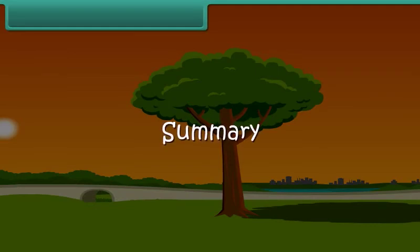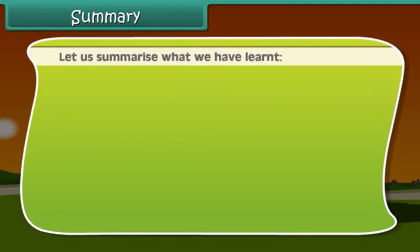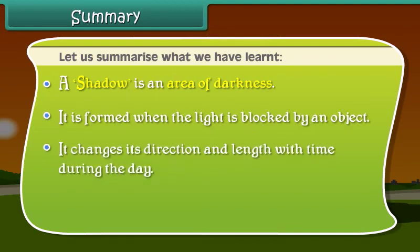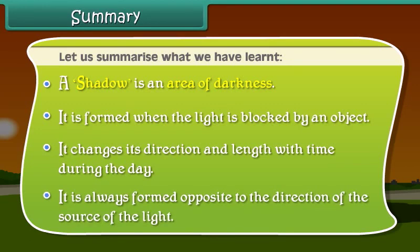Summary. Now friends, let's summarize what we have learned. A shadow is an area of darkness. It is formed when the light is blocked by an object. It changes its direction and length with time during the day. It is always formed opposite to the direction of the source of the light.